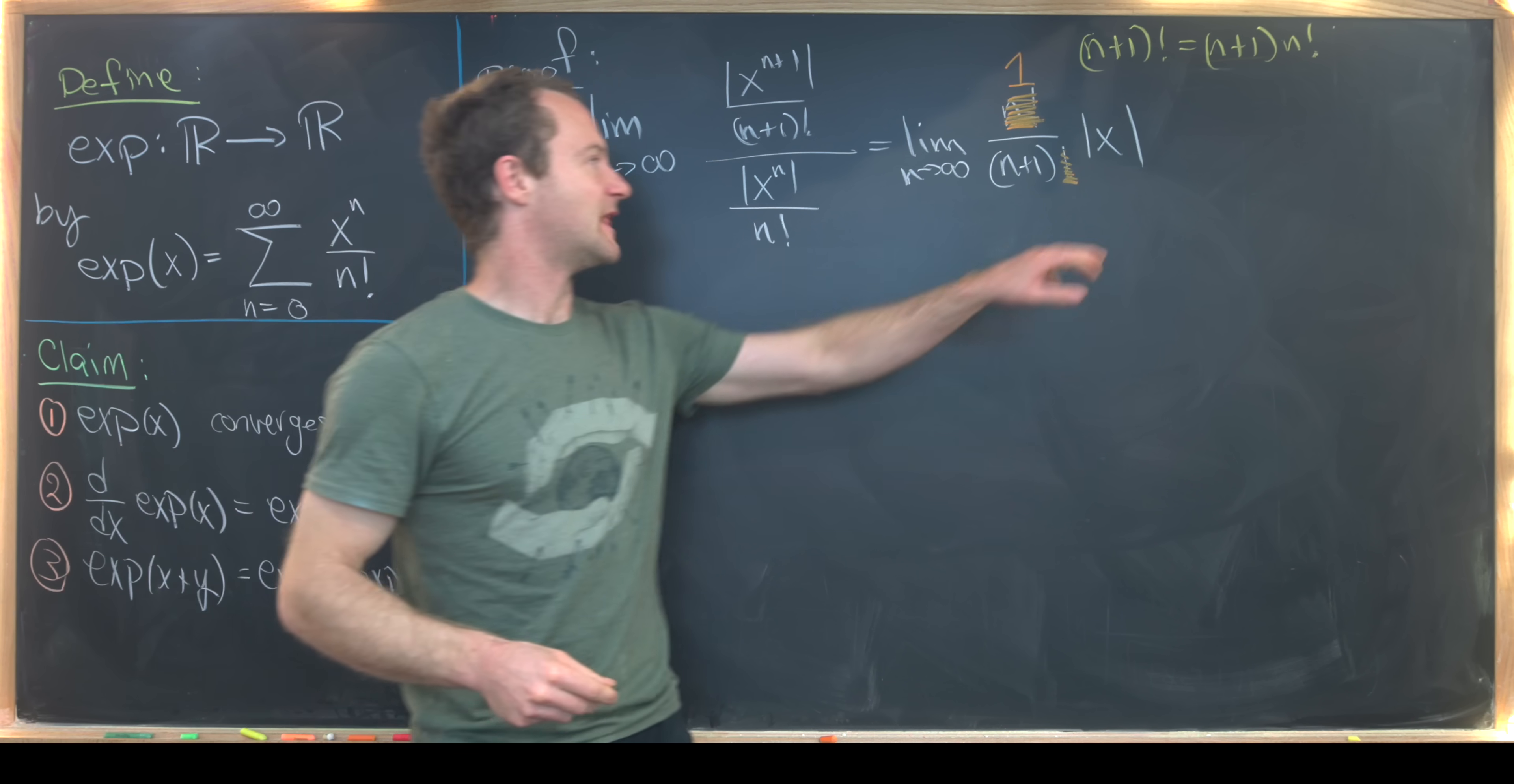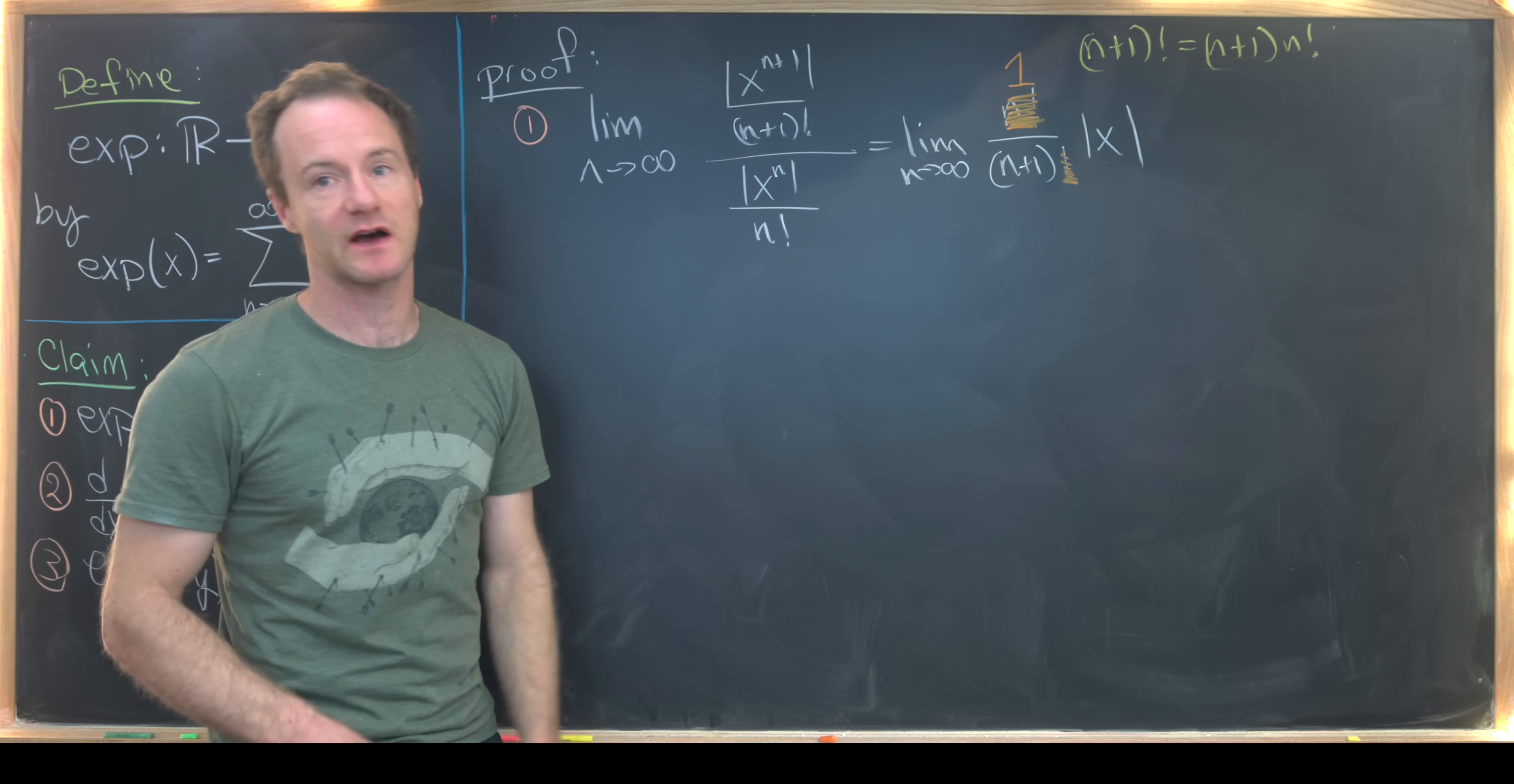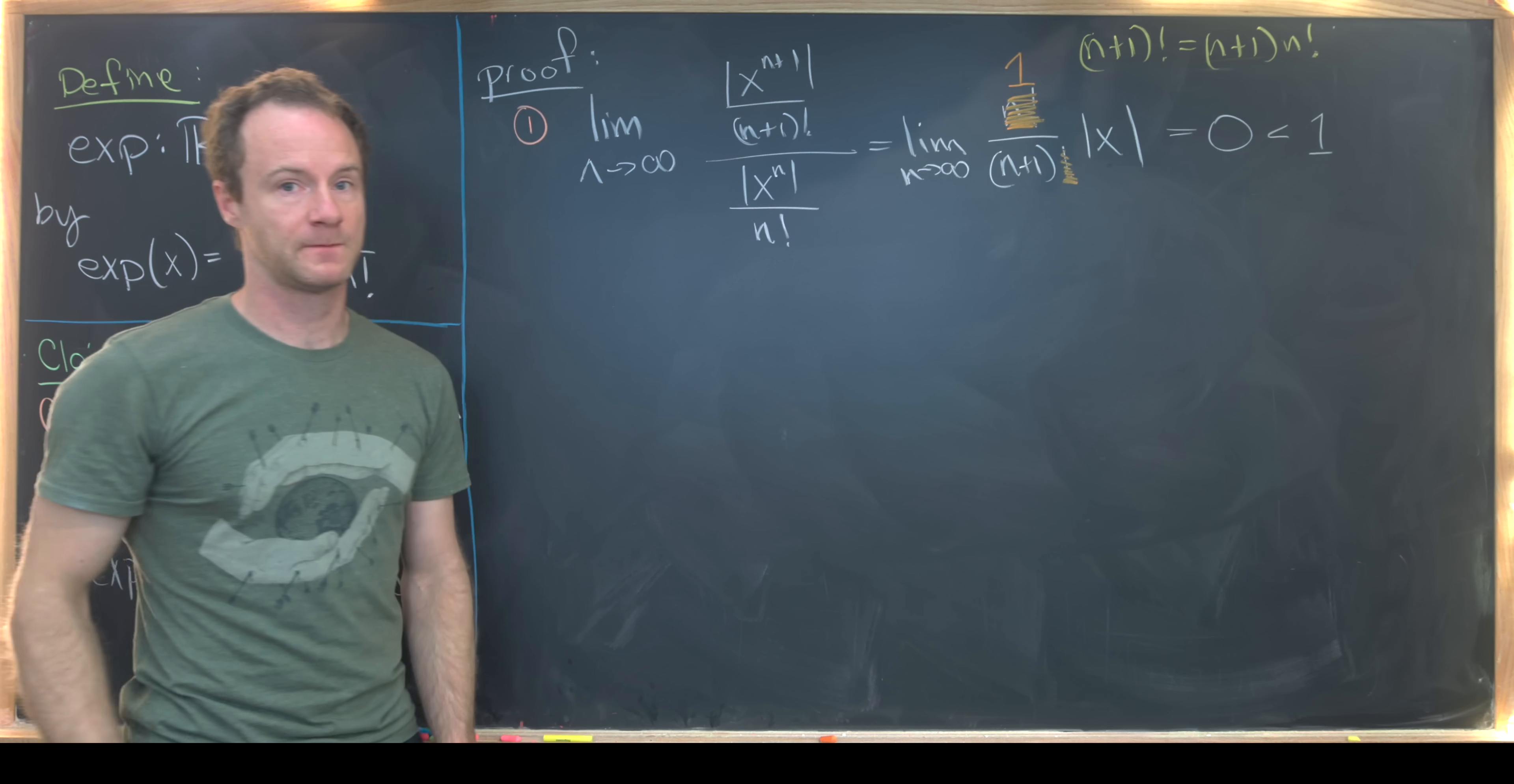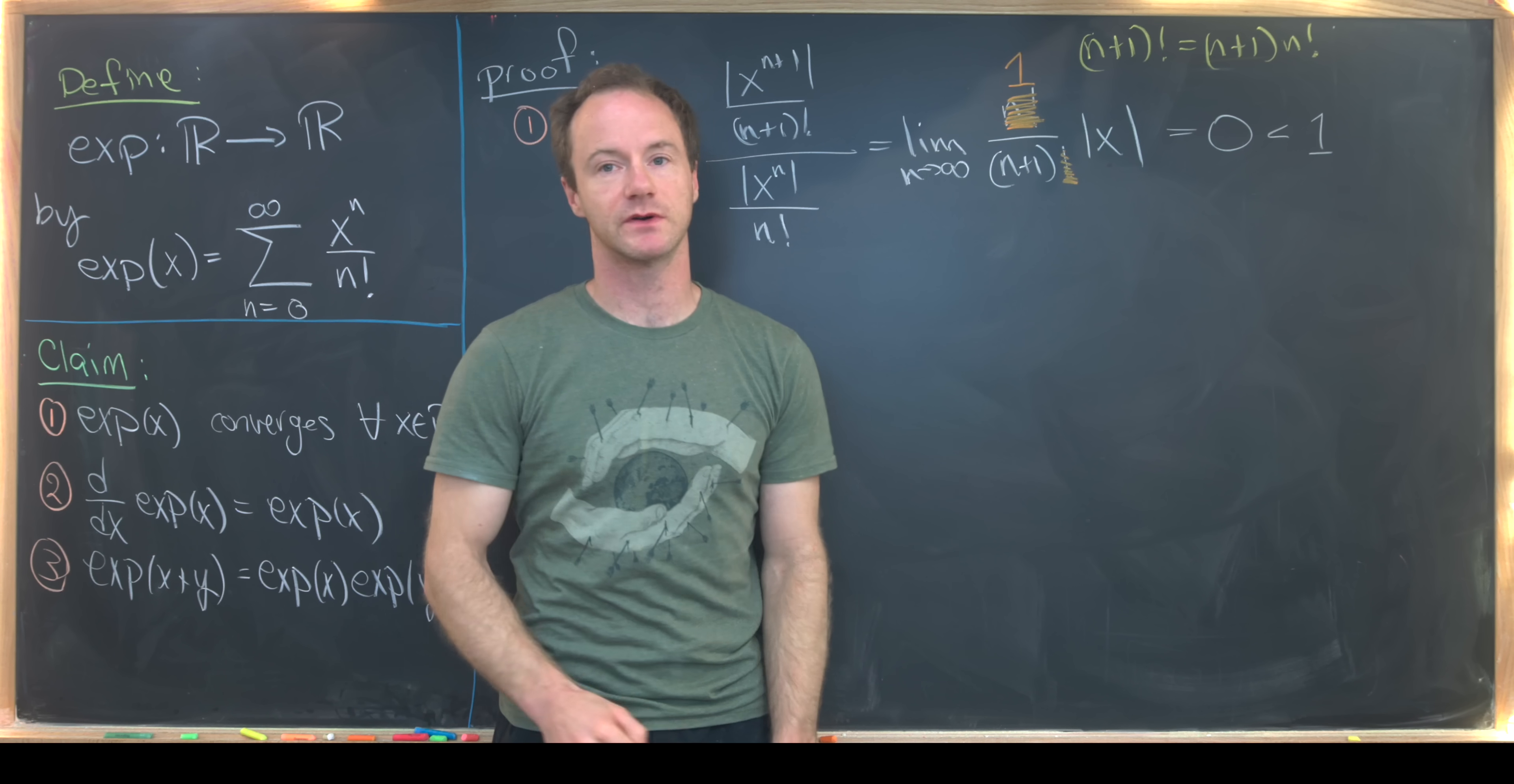But now let's notice that x is not a variable with respect to the limit. So it's a constant with respect to the limit, which means as n goes to infinity, at some point, this n+1 will be much, much, much bigger than the absolute value of x, meaning this tends towards zero. But we want to notice that zero is most definitely always less than 1. But this ratio being less than 1 means that this original series absolutely converges. And since that occurs for all values of x, this thing absolutely converges for all values of x, which are real numbers.